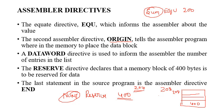The last assembler directive is END. When the assembler comes across this directive, it indicates that the program has ended. The last instruction of the program will always be END, indicating the last line of the program.